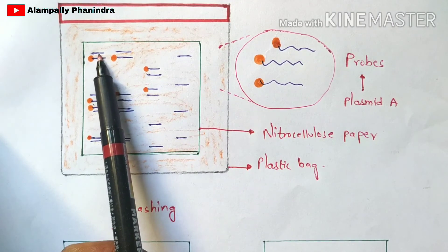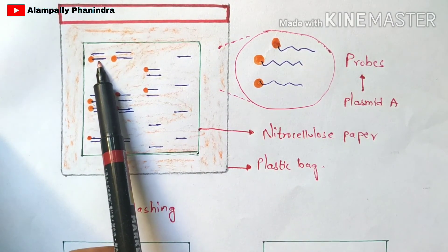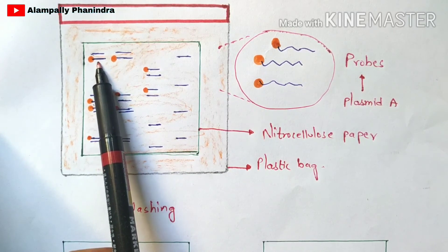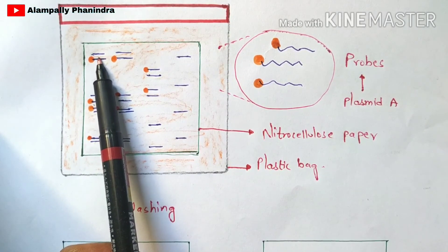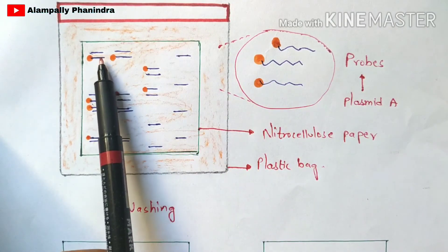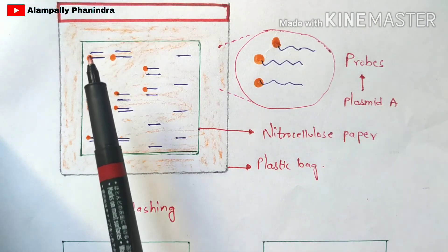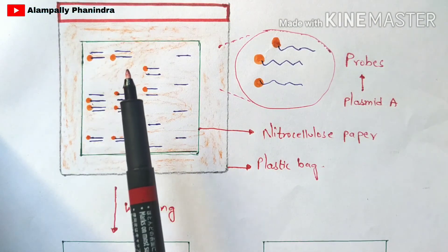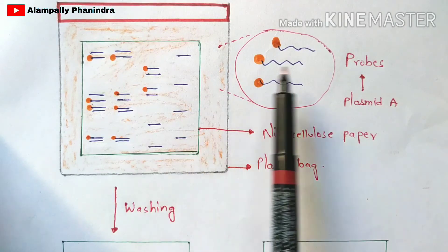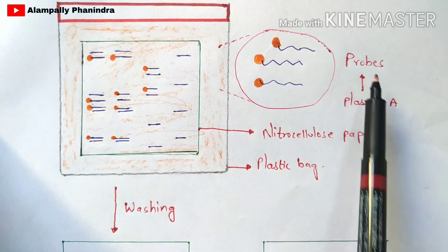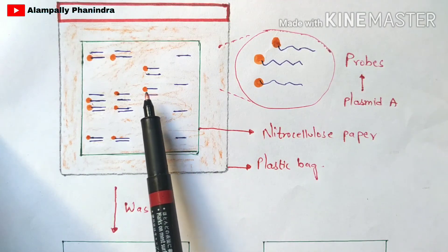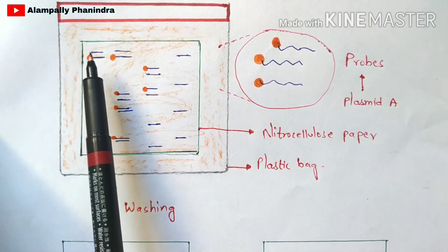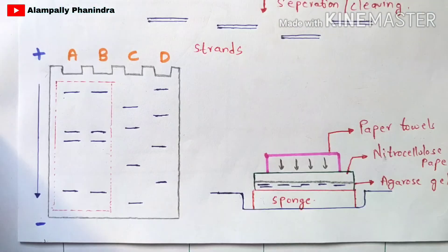The probe binds to the template strand because it is complementary to it. This allows the probes to recognize and bind to specific sequences. The binding occurs only for some strands — specifically those related to plasmid A — because the probes have been extracted from plasmid A. For example, in the C well, only two strands get bound by the DNA probes, while the remaining strands cannot bind because they are not related to plasmid A.